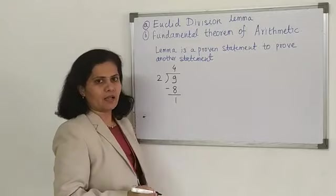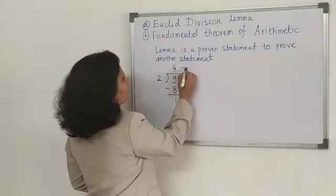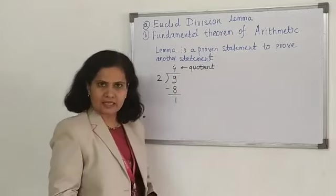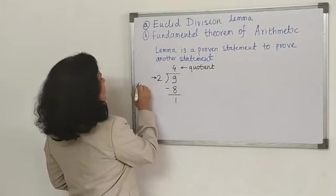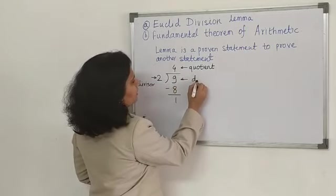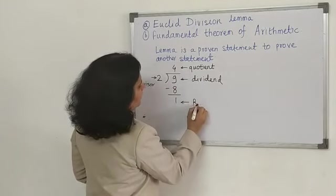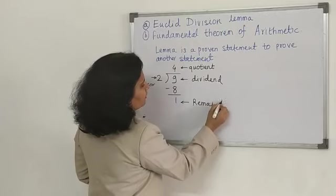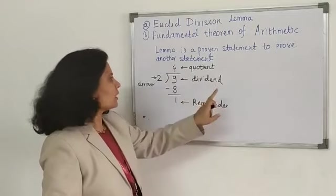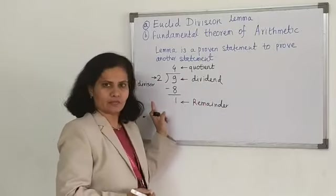One child will get 4 biscuits. What is here? 4 is quotient. 2 is divisor. What is 9? 9 is dividend. And 1 is remainder. So here, 4 is quotient, 9 is dividend, 1 is remainder, and 2 is divisor.